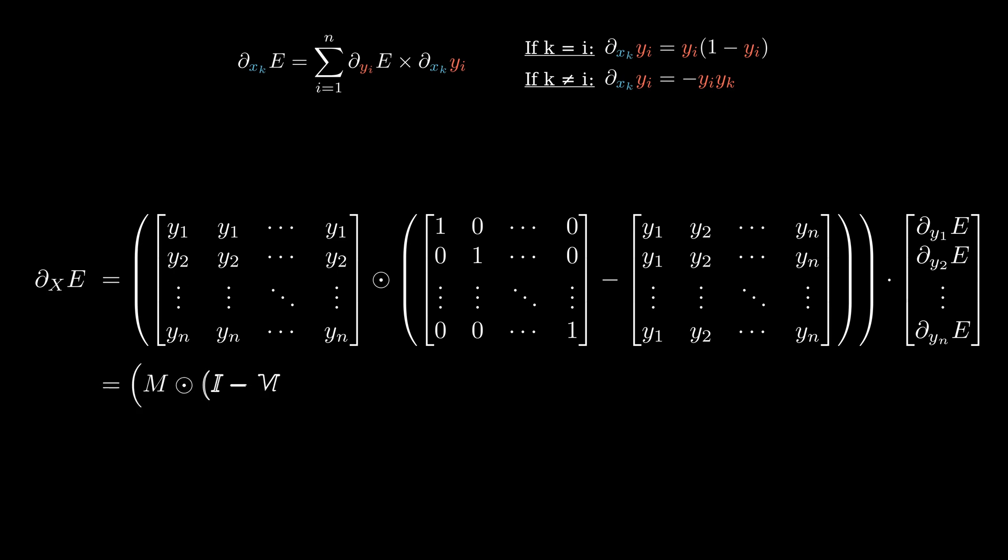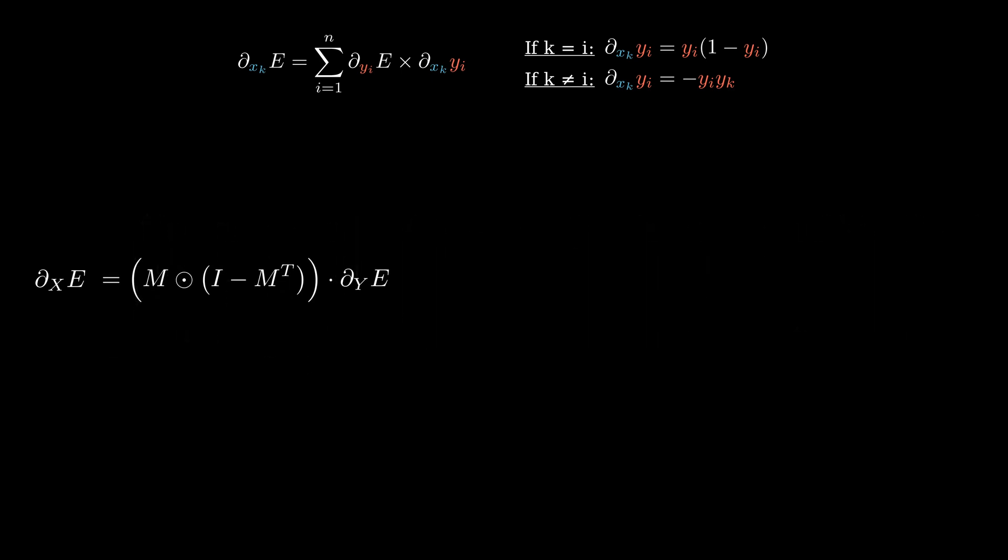If we call this matrix M, then the final result holds in a pretty small formula. That's it for the backward step.